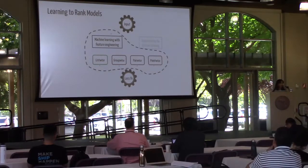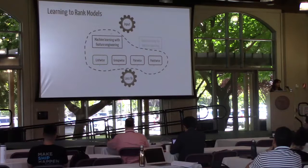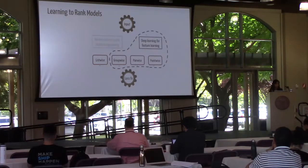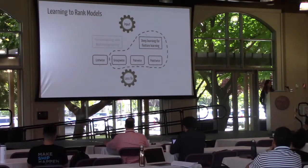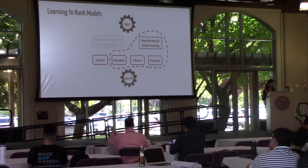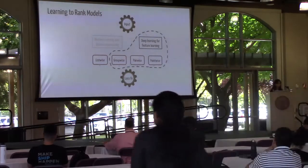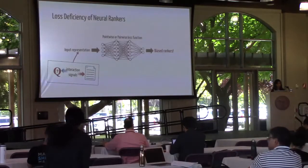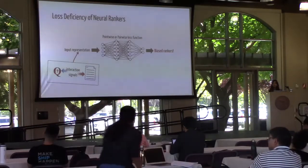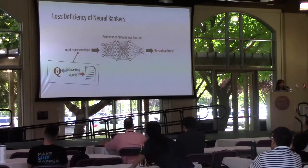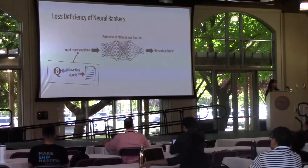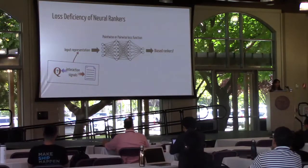However, neural models are mainly trained with the point-wise or pair-wise loss function, and we want to understand how this choice can affect the performance of the neural ranker.